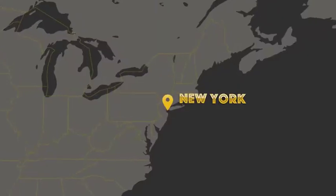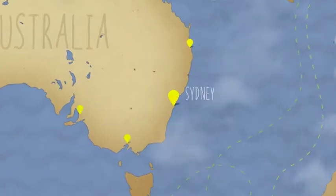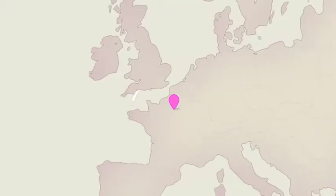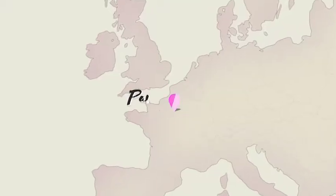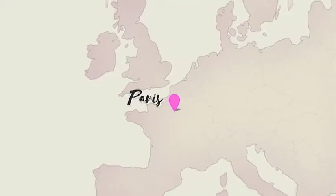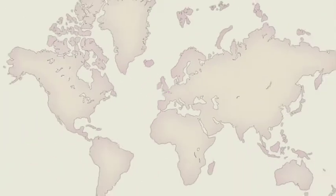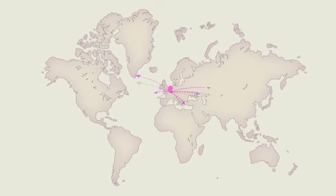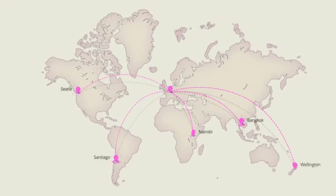New York, Sydney, or Paris. With six detailed continents and a map of the world, you can show where you are headed and keep your viewers informed every step of the way.